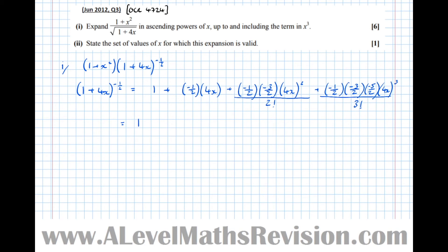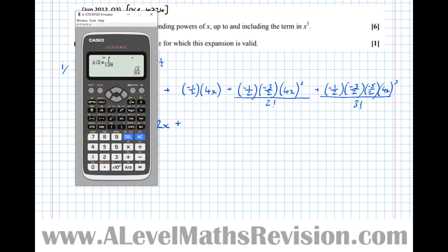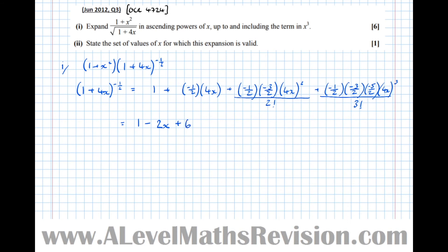Count the minus signs — there's one minus sign, so the whole thing becomes a minus, and ½ × 4 = 2, giving −2x. Count the minus signs again — there are 2, which make a plus. Using the calculator: 0.5 × 1.5 × 4² / 2! = 6, so plus 6x².